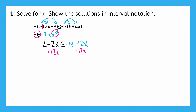Since this is a negative 12x, I'm going to need to add 12x on both sides to cancel it out. Negative 12x plus 12x cancels out, leaving just negative 18 on the right. On the left, negative 2x plus 12x makes positive 10x. Now I'm going to subtract 2 from both sides to get it away from the side with the x.